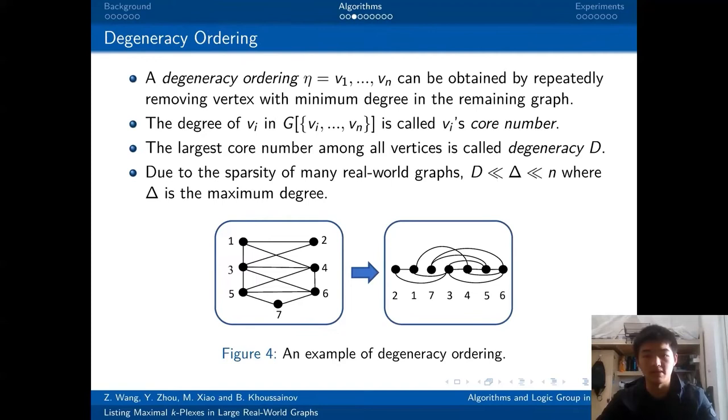And there is an important concept called the degeneracy ordering. A degeneracy ordering can be obtained by repeatedly removing a vertex with a minimum degree in the remaining subgraph. As you can see below, in the left graph, we can remove the vertices 2, 1, 7, 3, 4, 5, 6 by turn. And the corresponding ordering is 2, 1, 7, 3, 4, 5, 6.